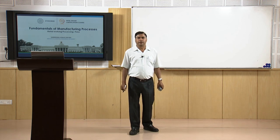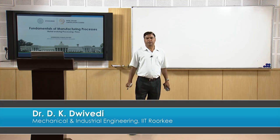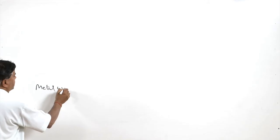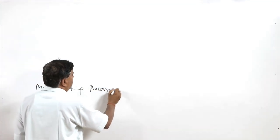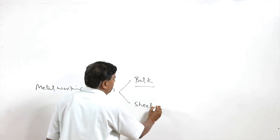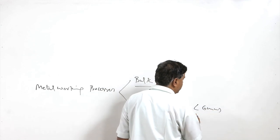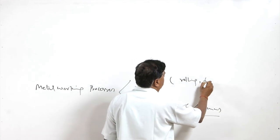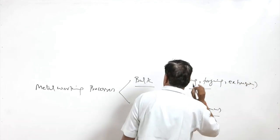I welcome you all in this presentation related with the subject fundamentals of the manufacturing process. We are talking about metal working processes, which can be placed in two categories: one where bulk material deformation takes place, and another where sheet metal is deformed. Sheet metals are normally less than 6mm, and bulk material deformation processes like rolling, forging, and extrusion fall in the category of bulk material processing.